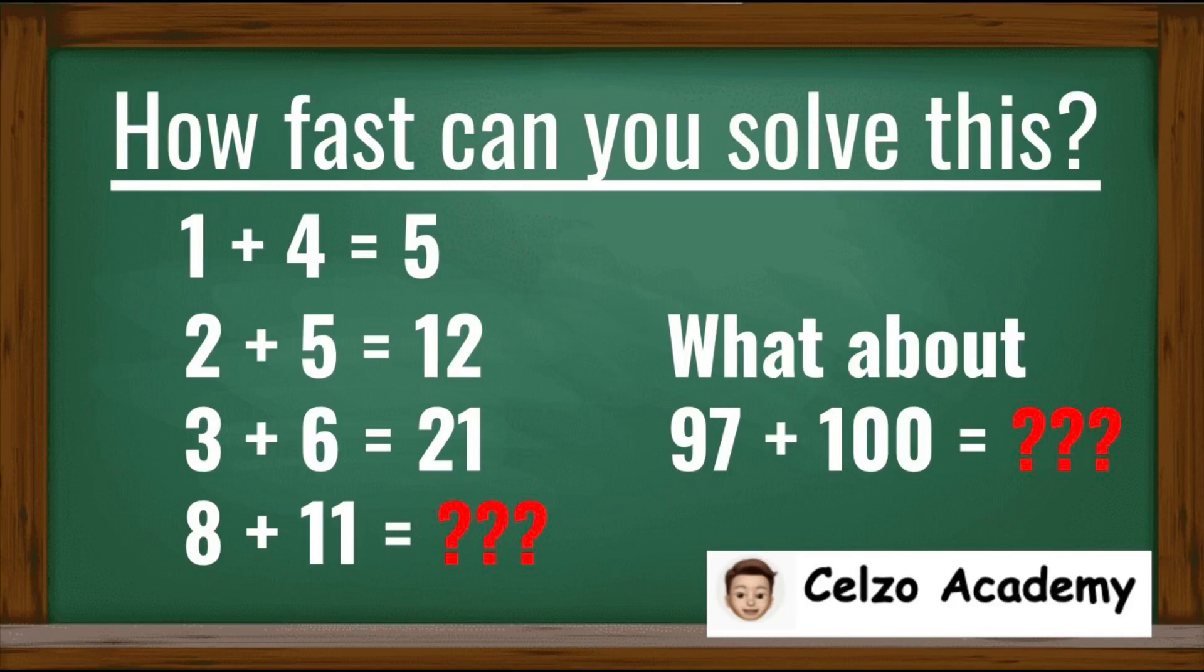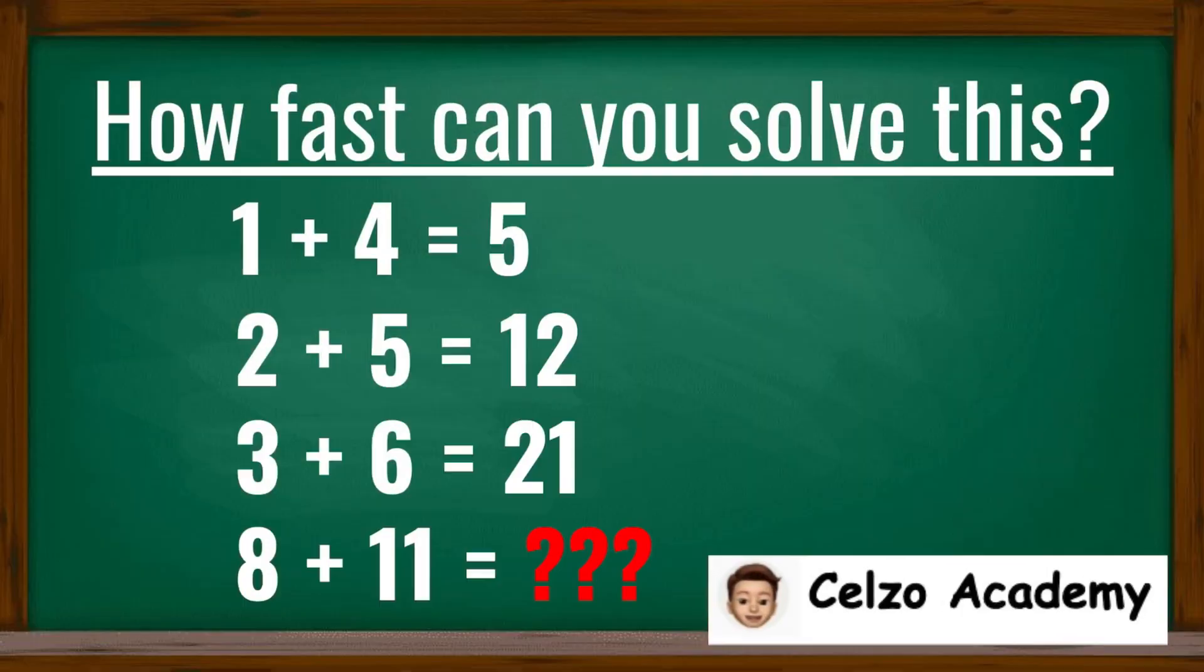Let's investigate this problem involving pattern 1 plus 4 equals 5, which is a true equation. 2 plus 5 equals 12. This means the plus sign here is a made-up operation. 3 plus 6 is 21. And find the value of 8 plus 11.